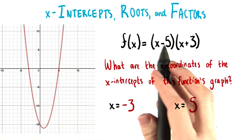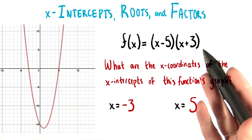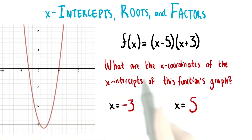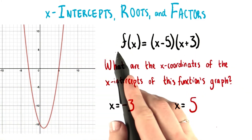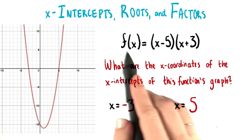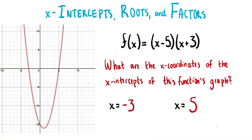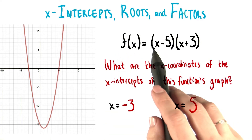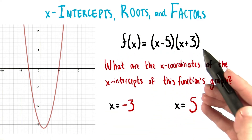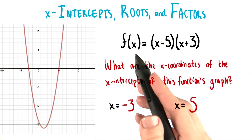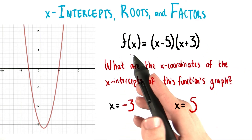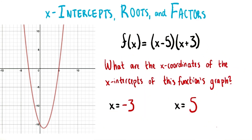We can see this from the equation as well, based on these factors. We know that at the x-intercepts, the value of the function is 0. So these are the two x-values that make either of these factors 0, which then makes the entire expression equal to 0.